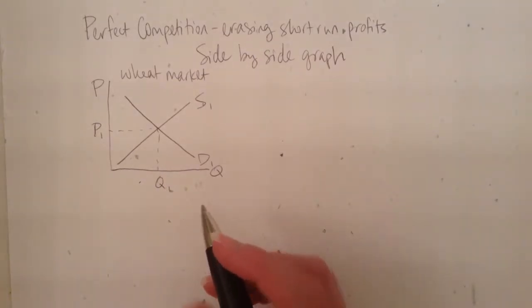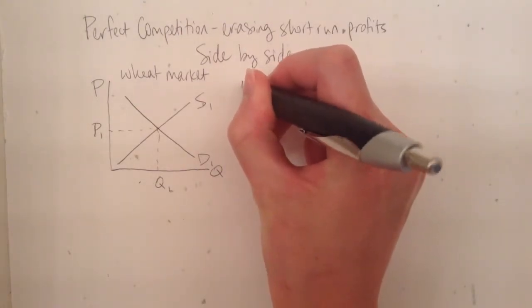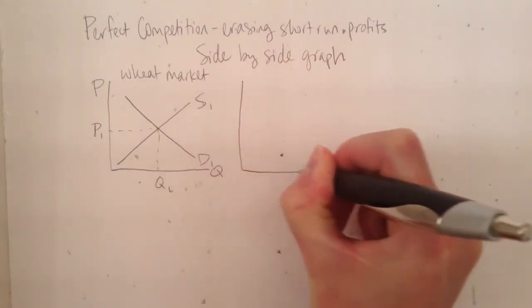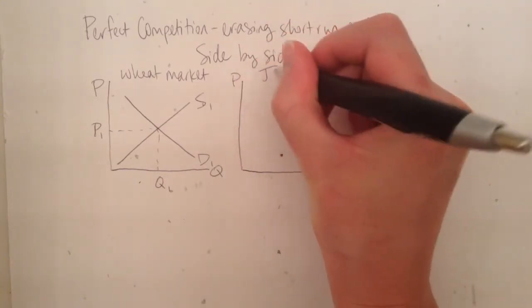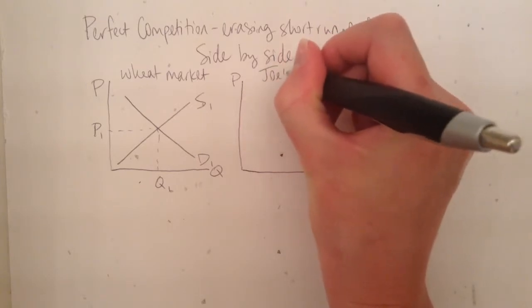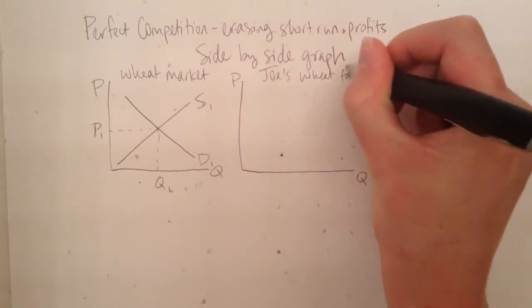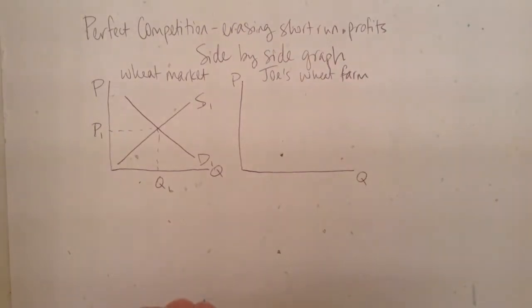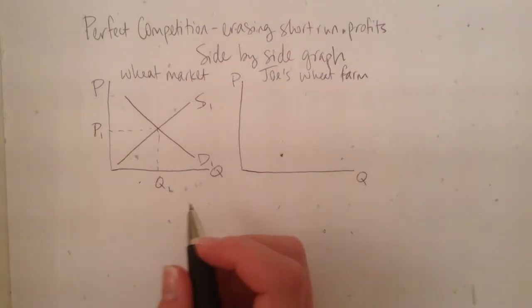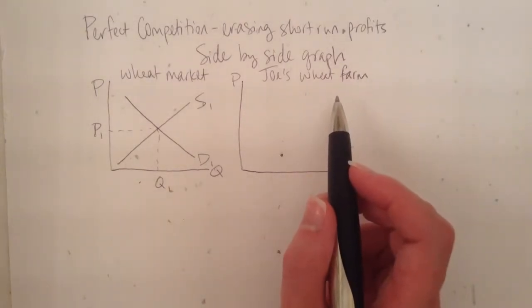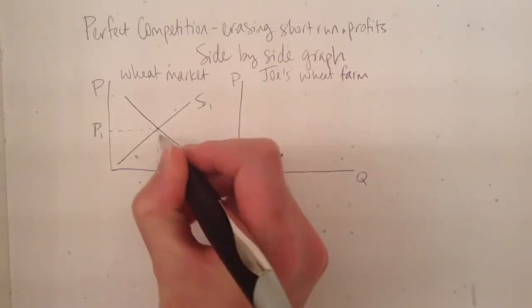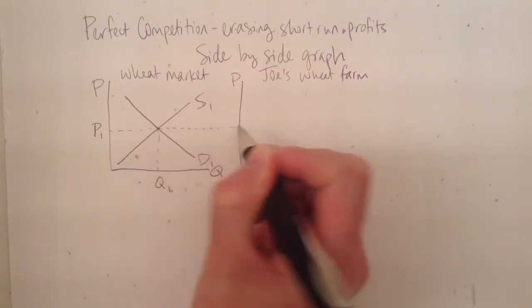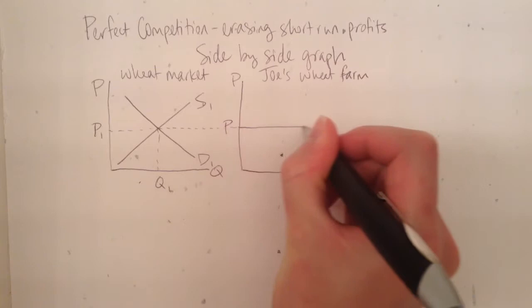The side-by-side part comes in like this. You're going to draw the firm graph directly to the side of your market graph. So let's say that this is going to be the graph for Joe's Wheat Farm. He's a wheat farmer in this perfectly competitive wheat market. The whole purpose of the side-by-side graph is to demonstrate that Joe's Wheat Farm and any other perfectly competitive firm is a price taker, meaning that this market price is also the price that Joe will be able to get for his wheat.